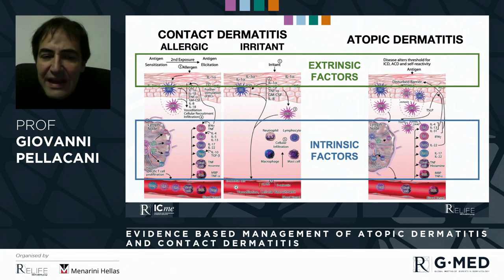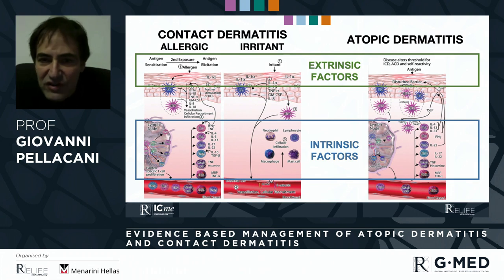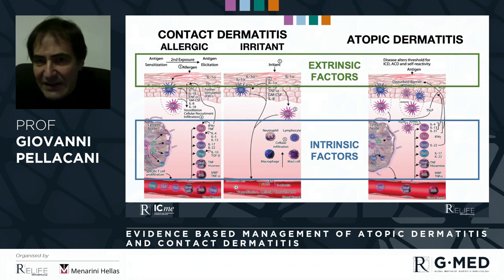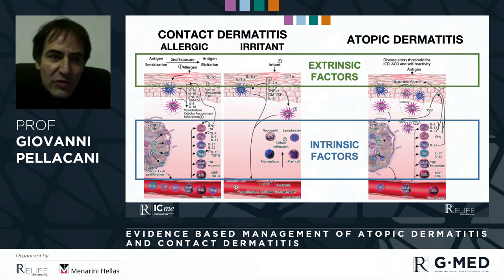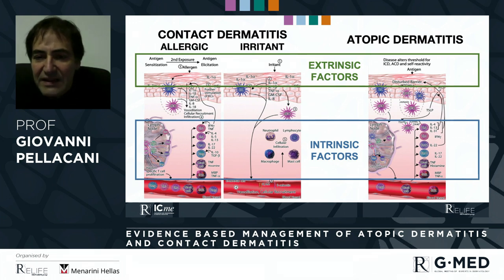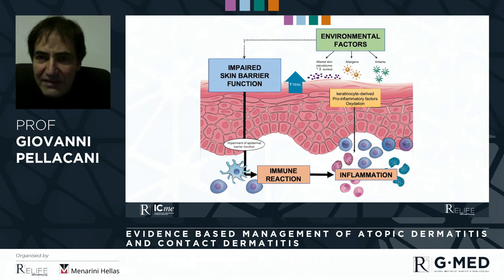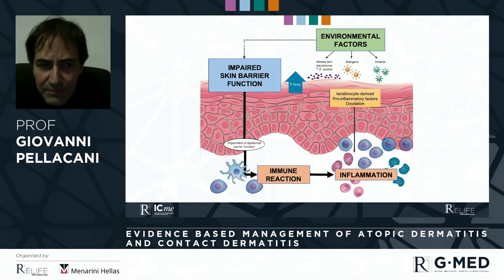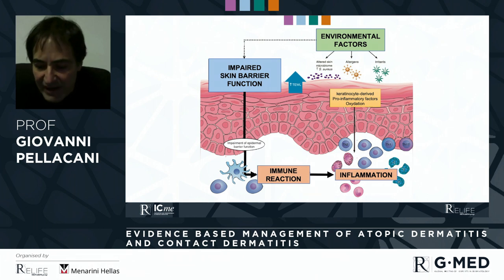The second battlefield is the immunologic and inflammatory system, where intrinsic factors influence the disease manifestation. Intrinsic factors are obviously required in atopic dermatitis — to have an atopic trend — but also in allergic contact dermatitis and eventually in irritant contact dermatitis. Personal characteristics can influence disease manifestation. So these diseases share environmental factors, impaired skin barrier function, and immune-inflammatory reactions.